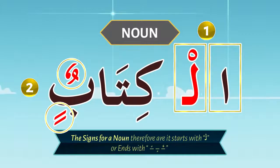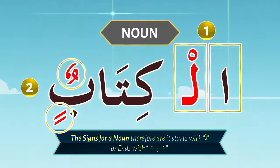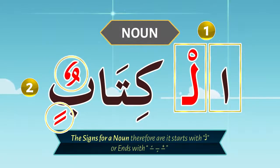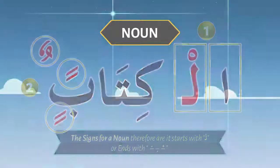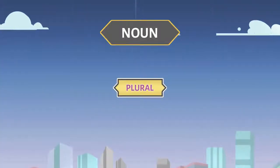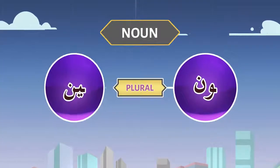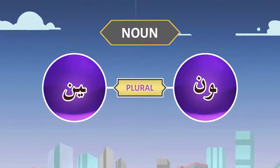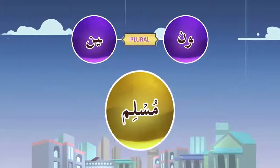In the last lesson, we learned that a noun starts with 'ul' or ends with 'un' and 'in'. One of the ways to make plurals is to add 'un' or 'in' at the end. This is one way. So let us take the word Muslim.